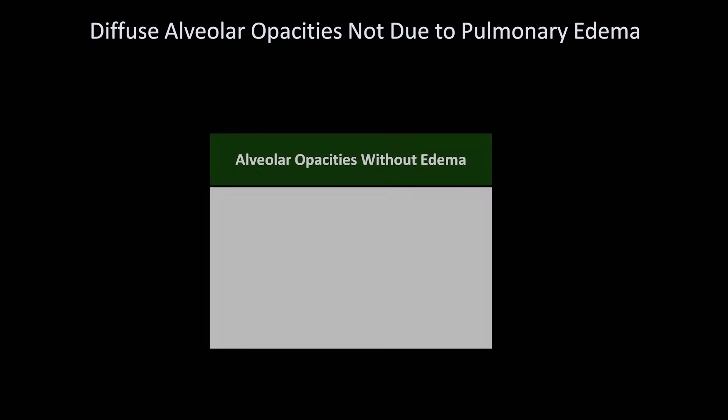Alveolar opacities can be caused not just by edema in the alveoli but also by pus or blood. Therefore, etiologies of diffuse alveolar opacities without edema include multilobar pneumonia and diffuse alveolar hemorrhage.